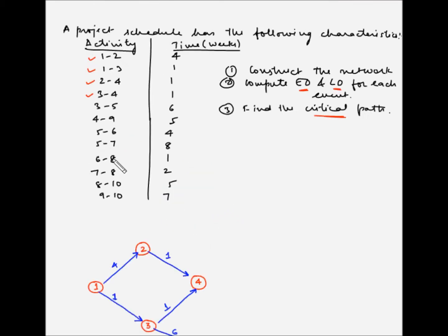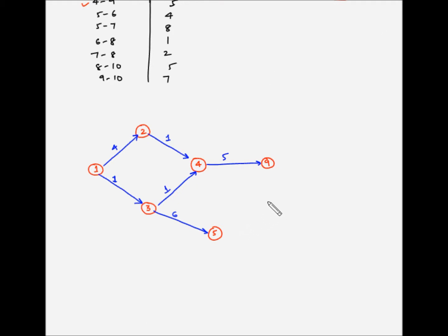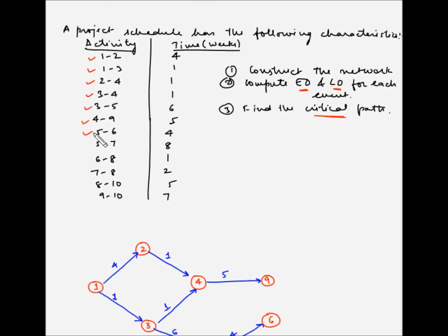Now activity 4-9. So 4 is here, let us draw 9 and the activity 4-9, which takes 5 weeks to complete. So we have done 4-9. Next is 5-6 and 5-7. So 5 is preceding both 6 and 7. Let us draw 6 and 7 and the arrows. Activity 5-6 takes 4 weeks and 5-7 takes 8 weeks. So 5-6 and 5-7 are done.